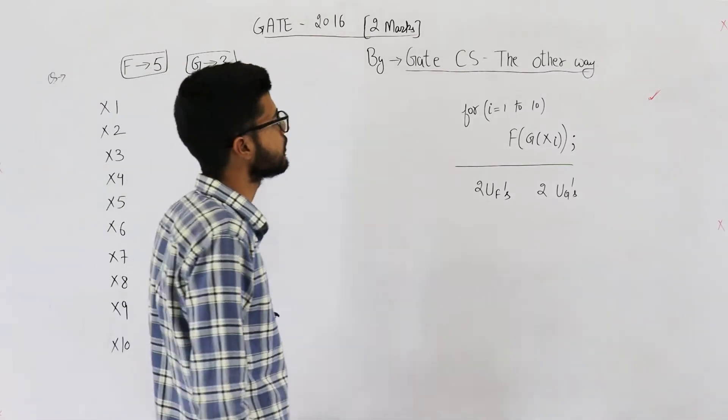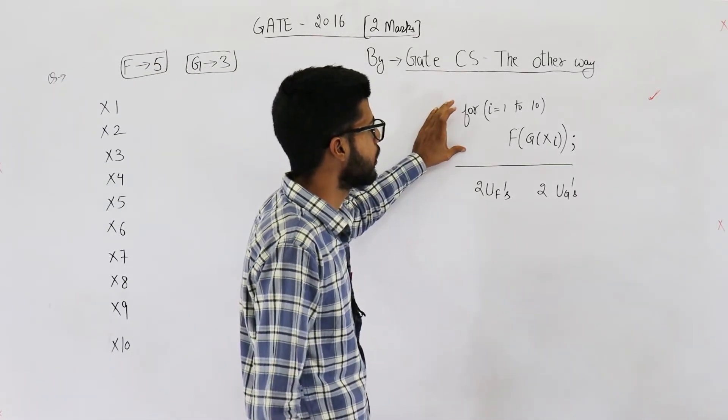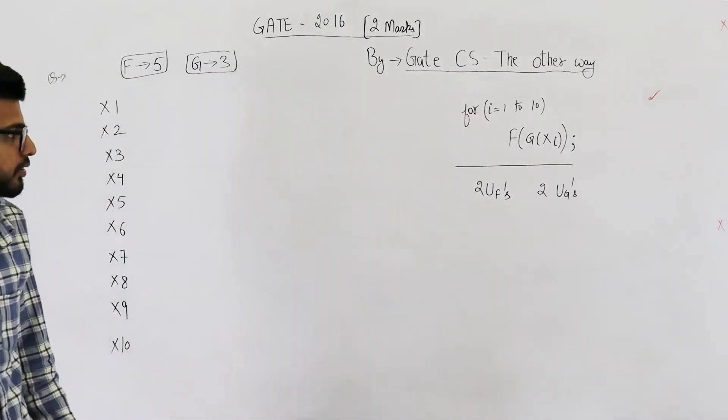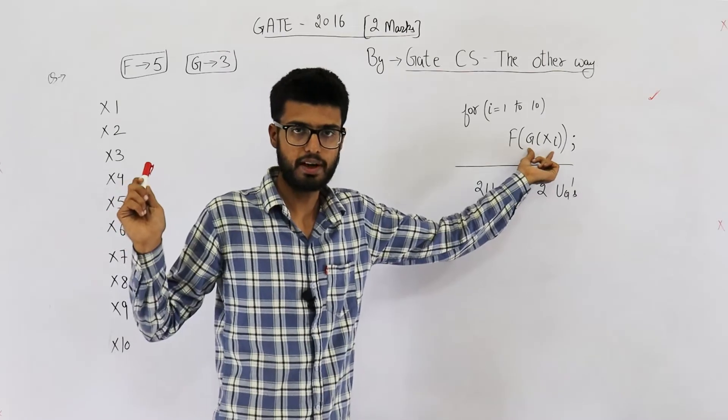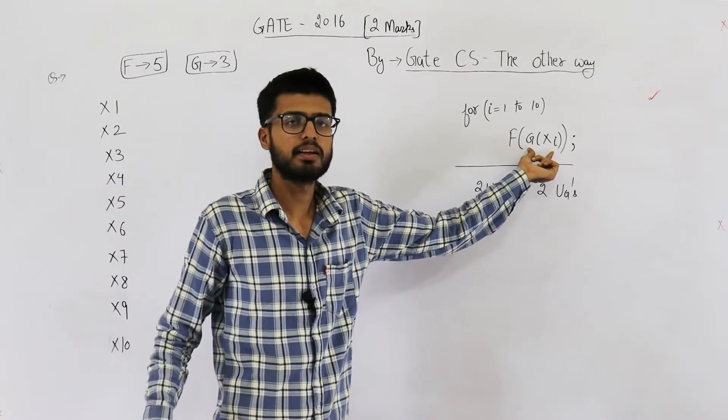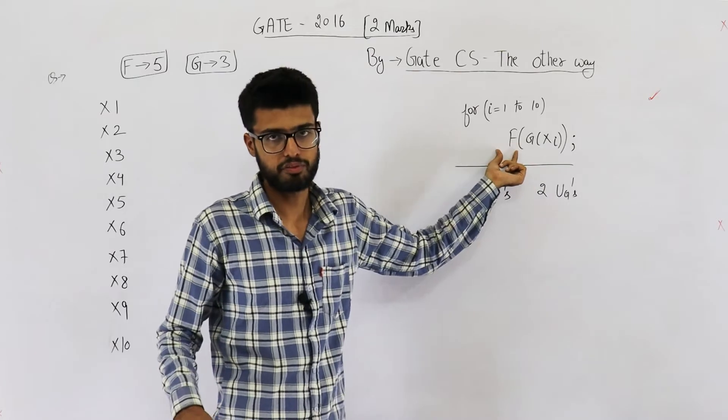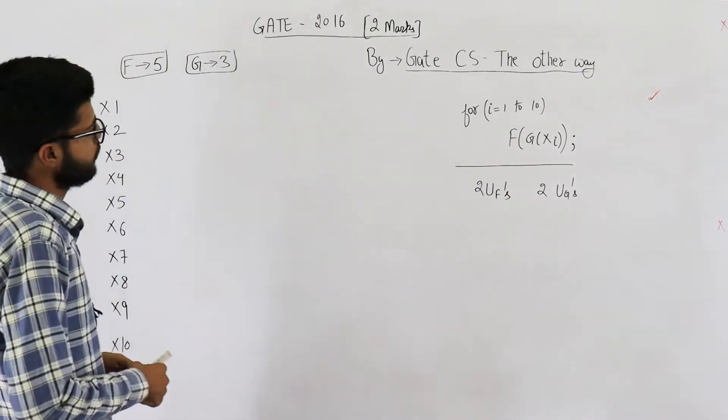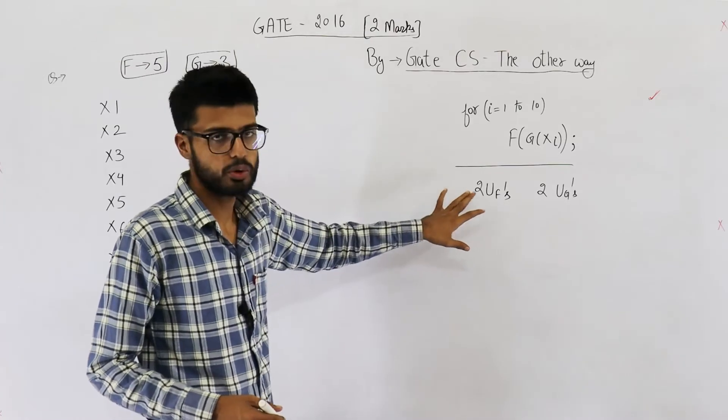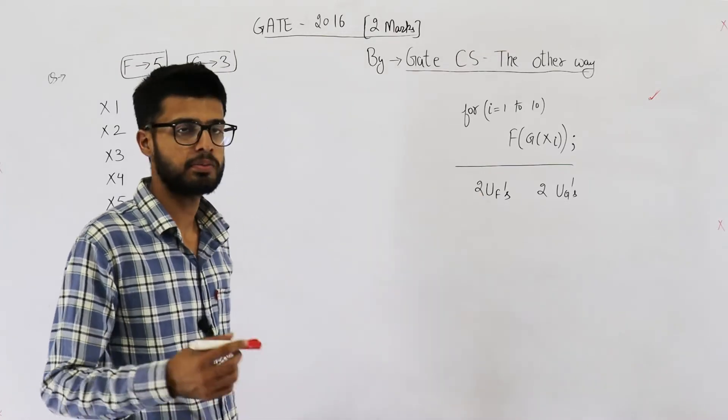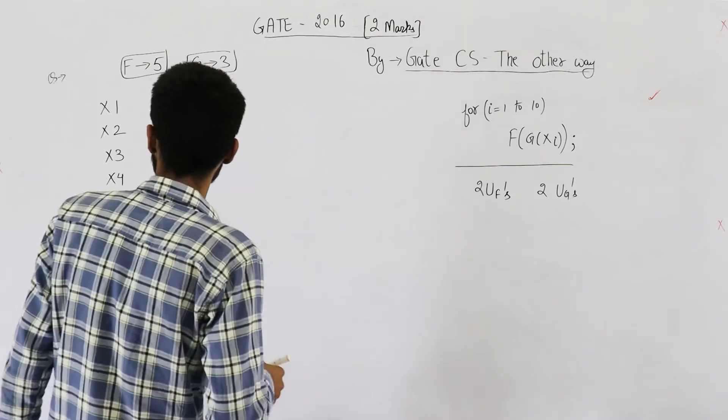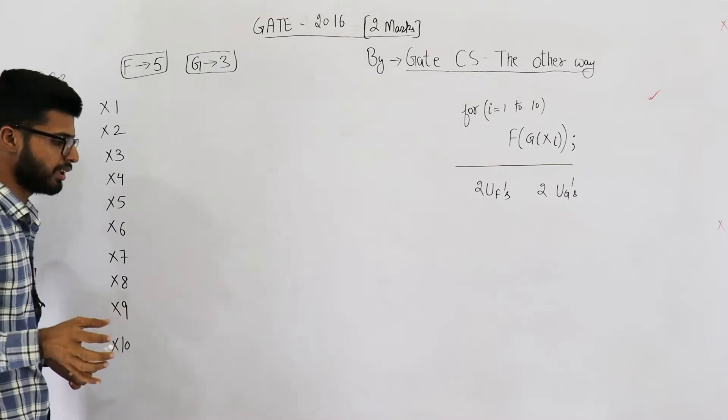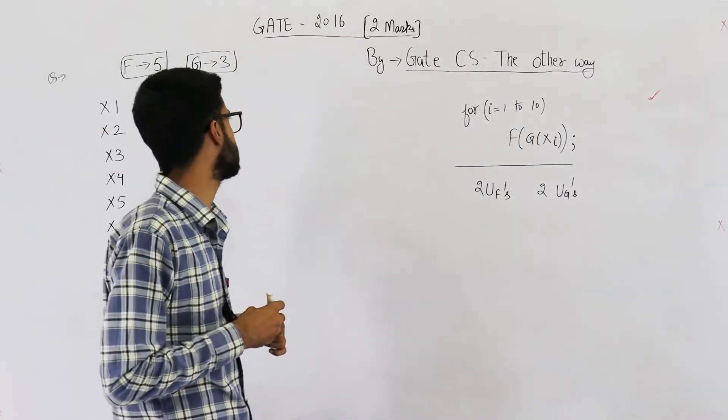The code that is to be executed is this or you can assume that for these 10 values, first you need to compute g of xi and then on that value you need to compute f. And they're also saying that there are two units of both the processors. That means in total we have four units. Now, what is the minimum time required to compute these values?